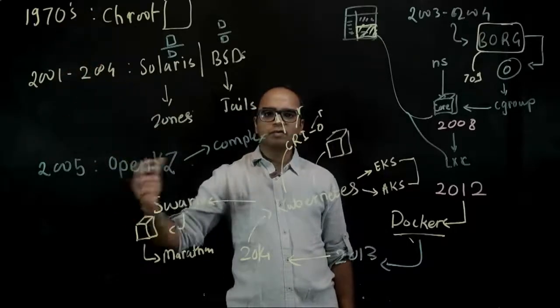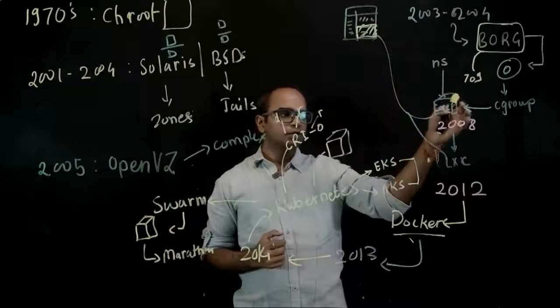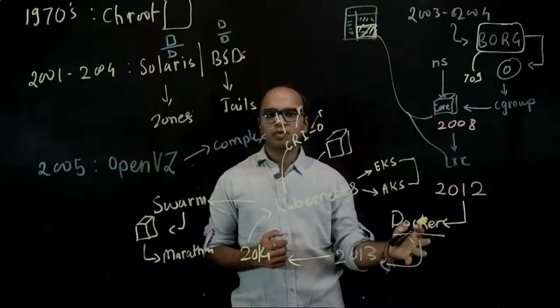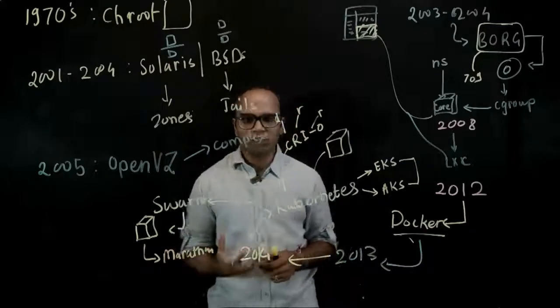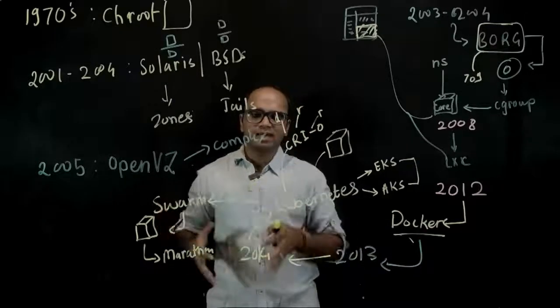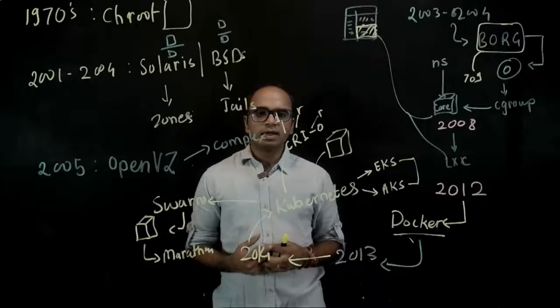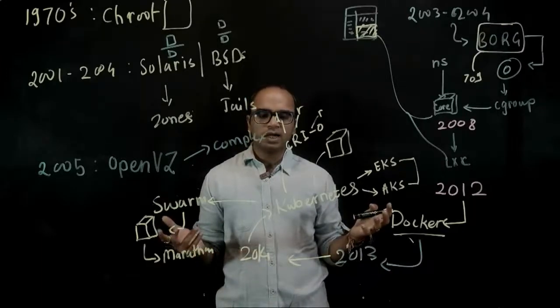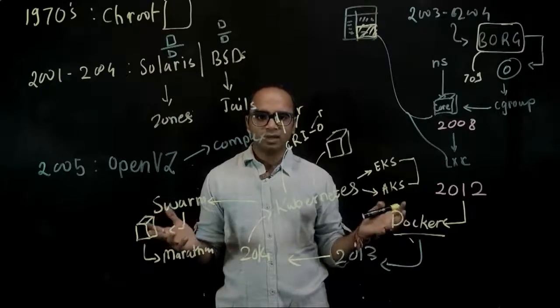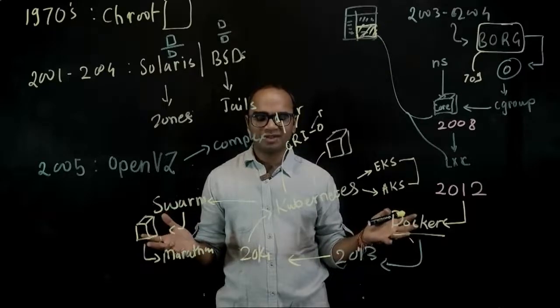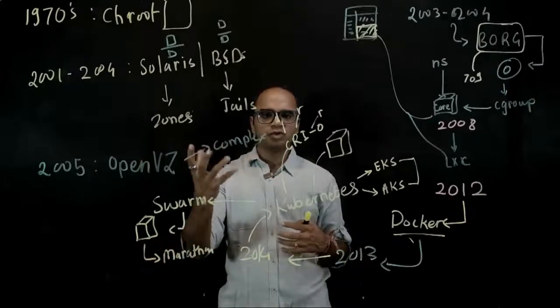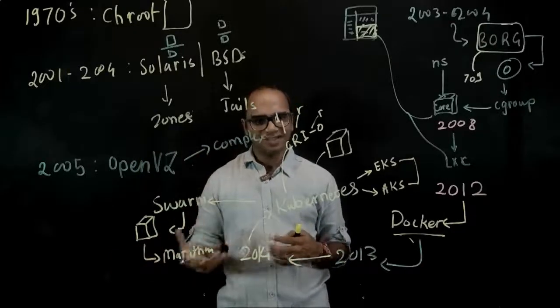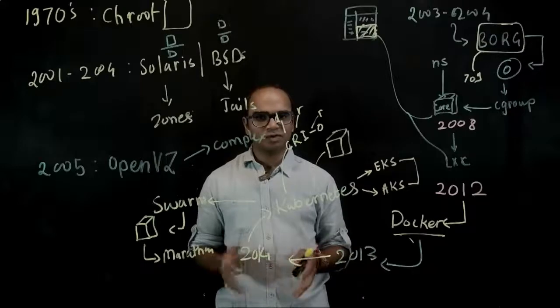So this is how we came from the chroot to Solaris and BSD they had their own system, to OpenVZ, to LXC, to Docker in around 2012 and Kubernetes in 2014. When we talk about this in late 2019 and 2020, Docker and Kubernetes are pretty much the standard in the world of container orchestration. It's important to know how this really evolved, and that was the purpose of this lesson. I hope you found this useful.